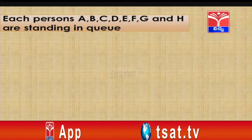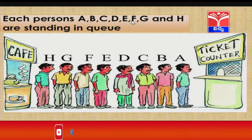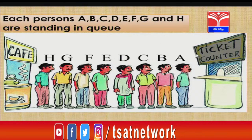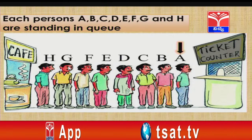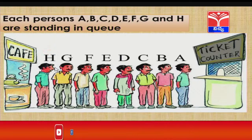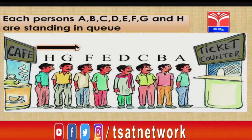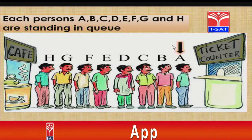Now let us see one more situation. In the following figure, persons A, B, C, D, E, F, G and H are standing in a queue. With reference to a ticket counter in this direction, A is the first person and H is the last person. If I change the point of reference to the coffee center in this direction, H will be the first person and A will be the last person.